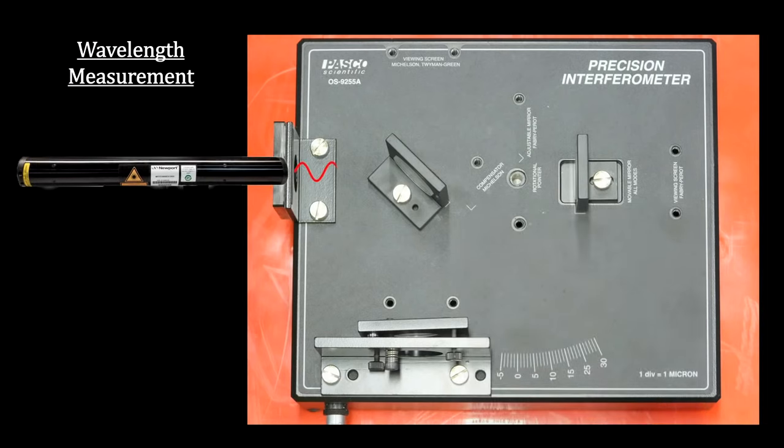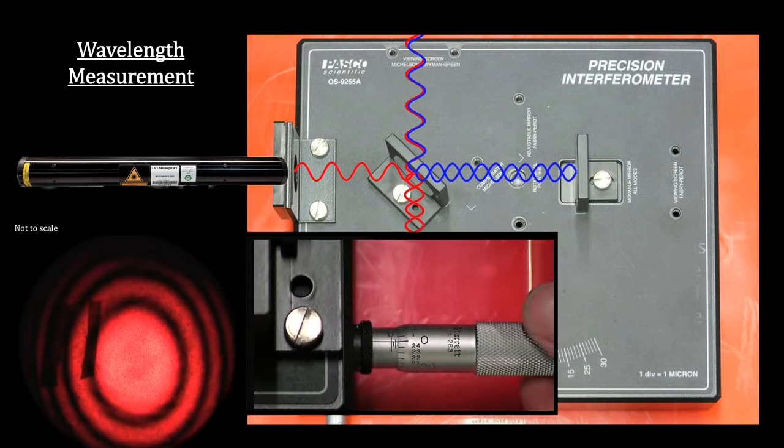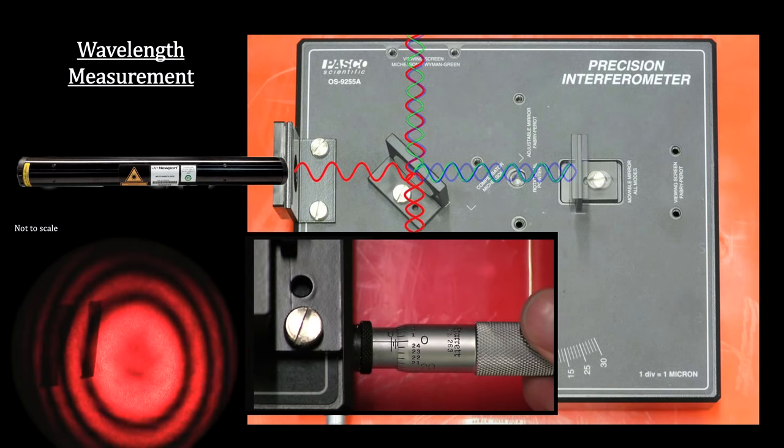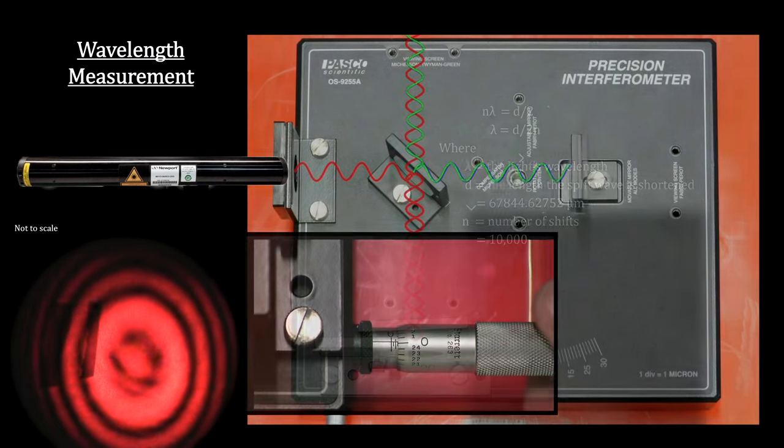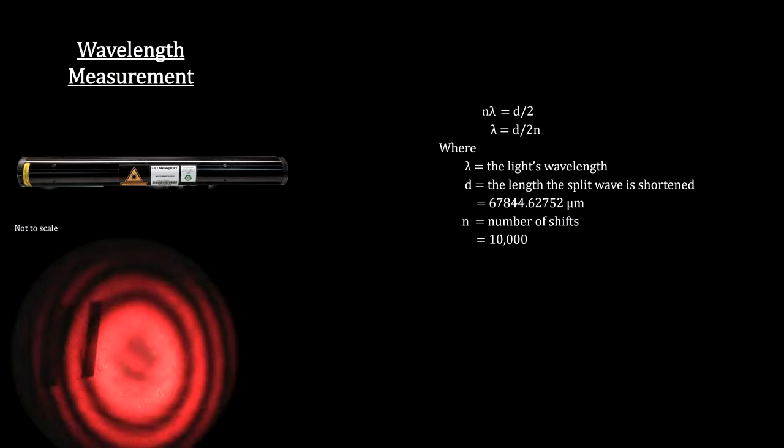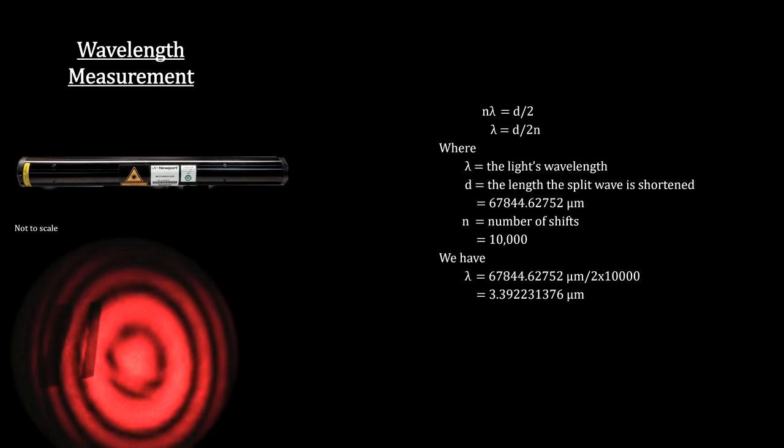To measure the wavelength, we use an interferometer. First, we set up equal path lengths for the light by getting the maximum constructive interference. Then, as we shorten one of the paths slowly to get, say, 10,000 fringe shifts, the wavelength of the light is the distance that we had to use to get this many shifts divided by twice the number of fringe shifts. The results showed that the wavelength is 3.392231376 micrometers.